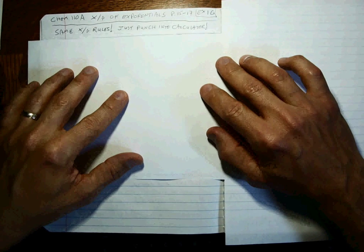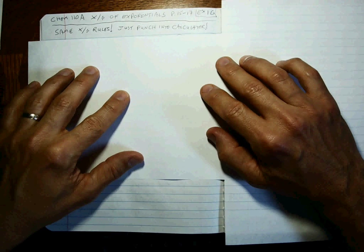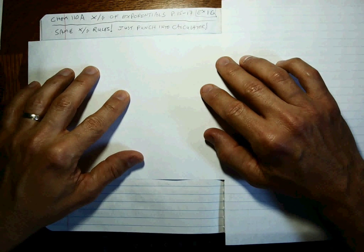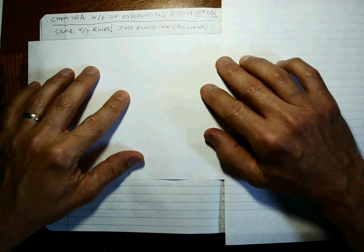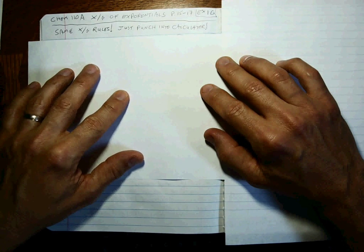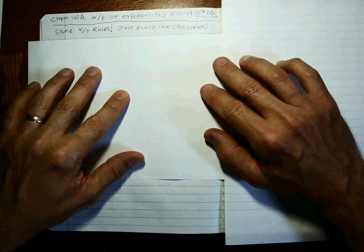This is simple. It's the exact same multiplication and division rules that you already learned. Your job is to punch these numbers into your calculator correctly, hit equals, and write down the right sig figs. It's a piece of cake.